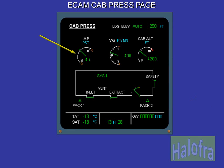The cabin differential pressure, or delta P, shows the difference in PSI between the cabin pressure and external pressure. The cabin vertical speed shows the rate of change in feet per minute of cabin altitude. For passenger comfort, the pressurization system will aim to keep this rate of change as small as possible. The cabin altitude is also shown.